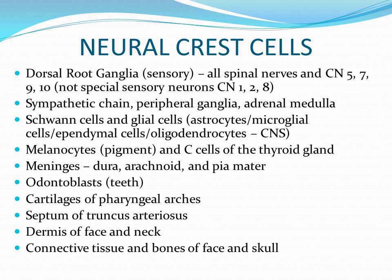The neural crest cells continue to develop and give us structures of importance, including all sensory afferent fibers that have their cell bodies in the dorsal root ganglia of all spinal nerves, and also of cranial nerves 5, 7, 9, and 10. The neural crest cells give us the sympathetic chain, the peripheral ganglia, and also the adrenal medulla. We'll talk more about sympathetic pre- and postganglionic autonomic fibers as we go along.